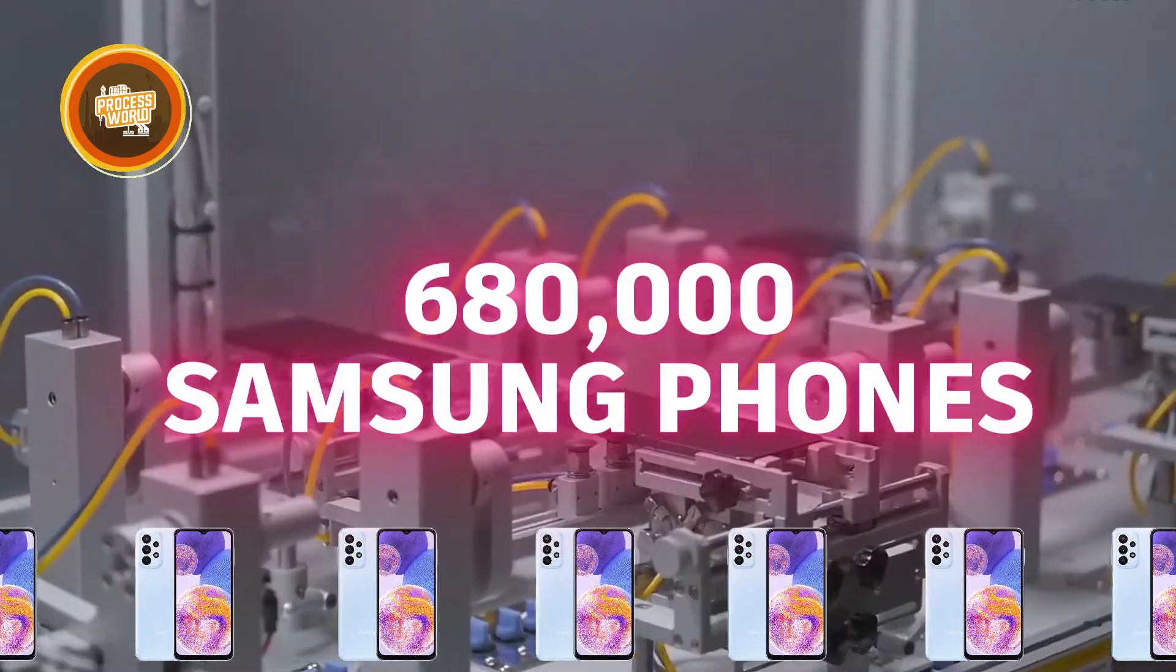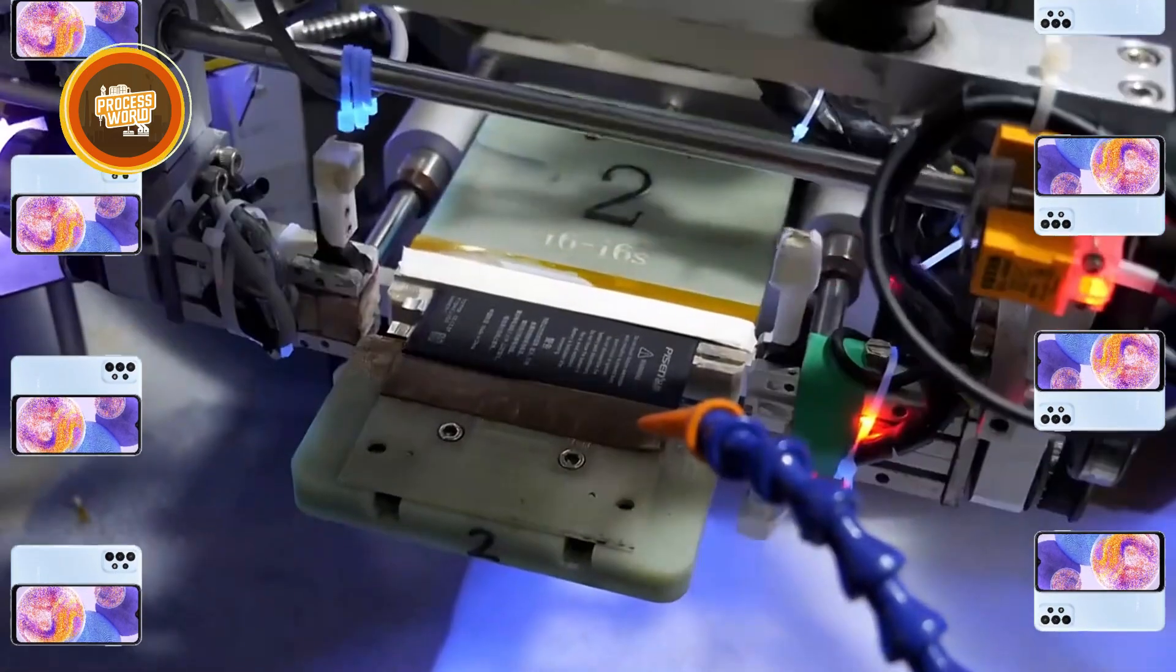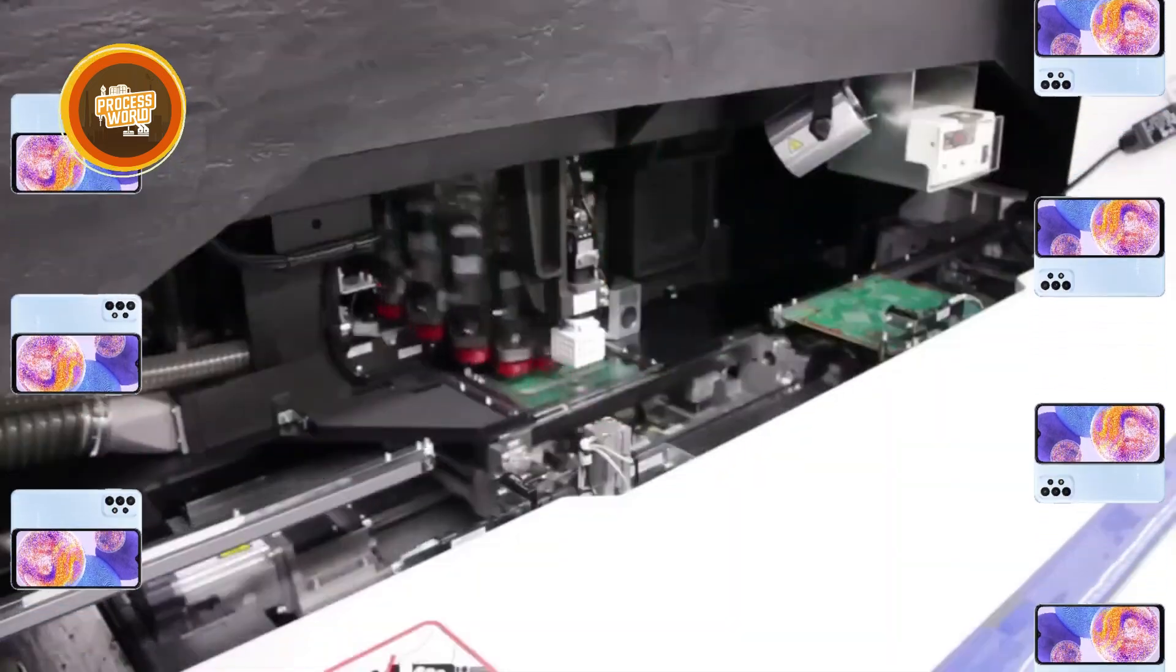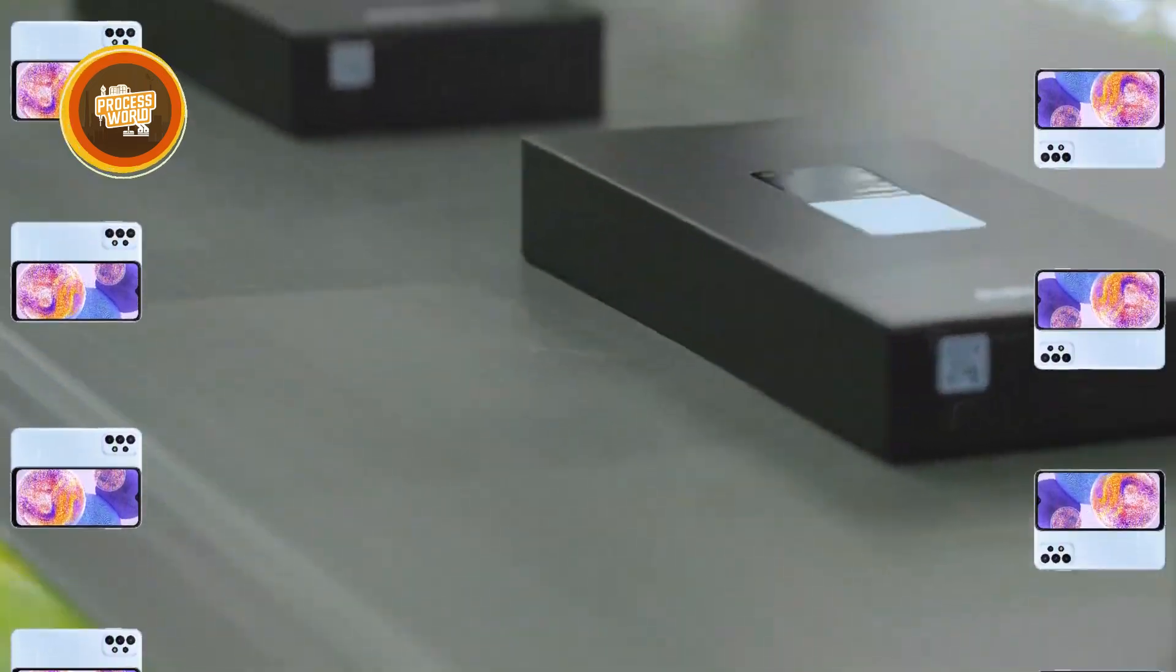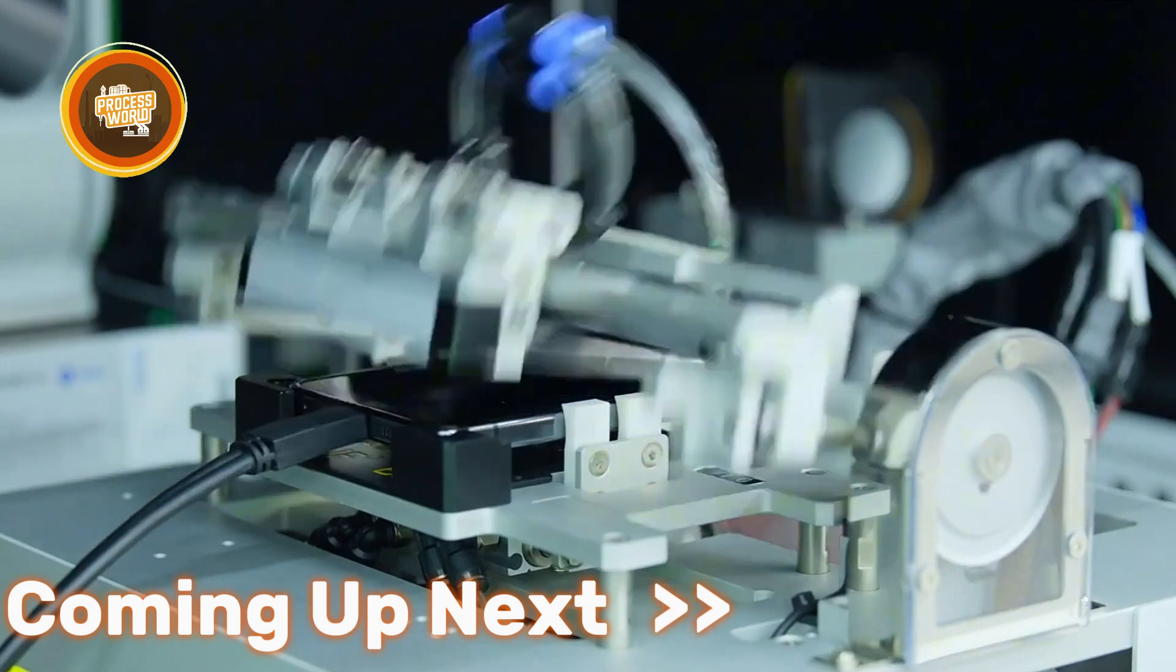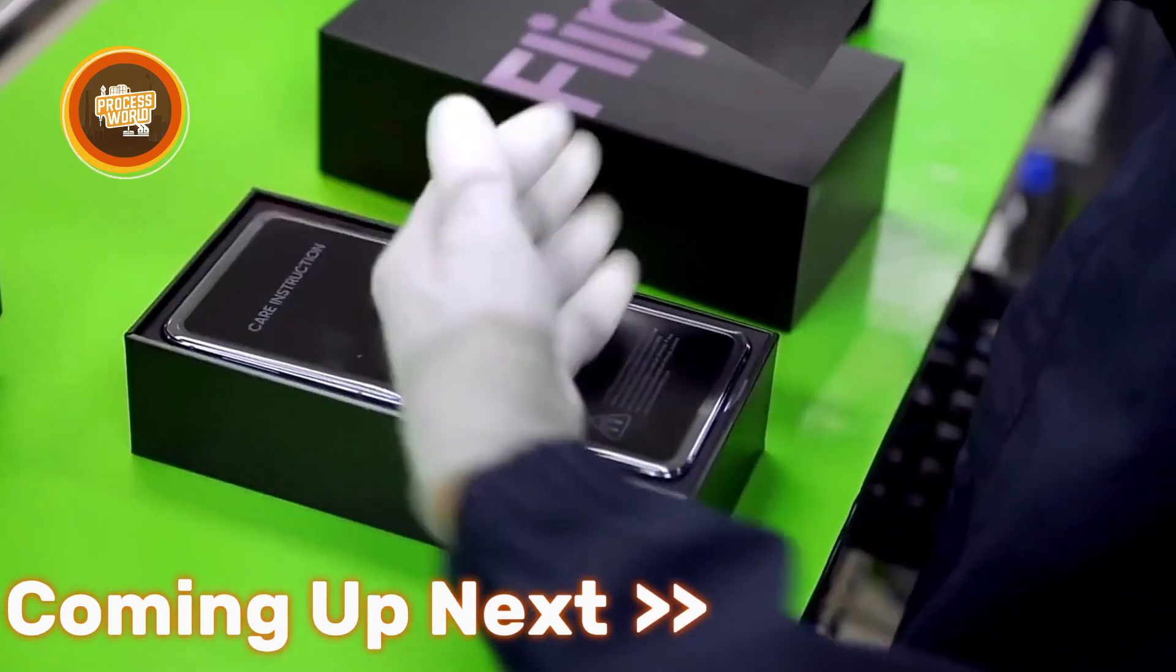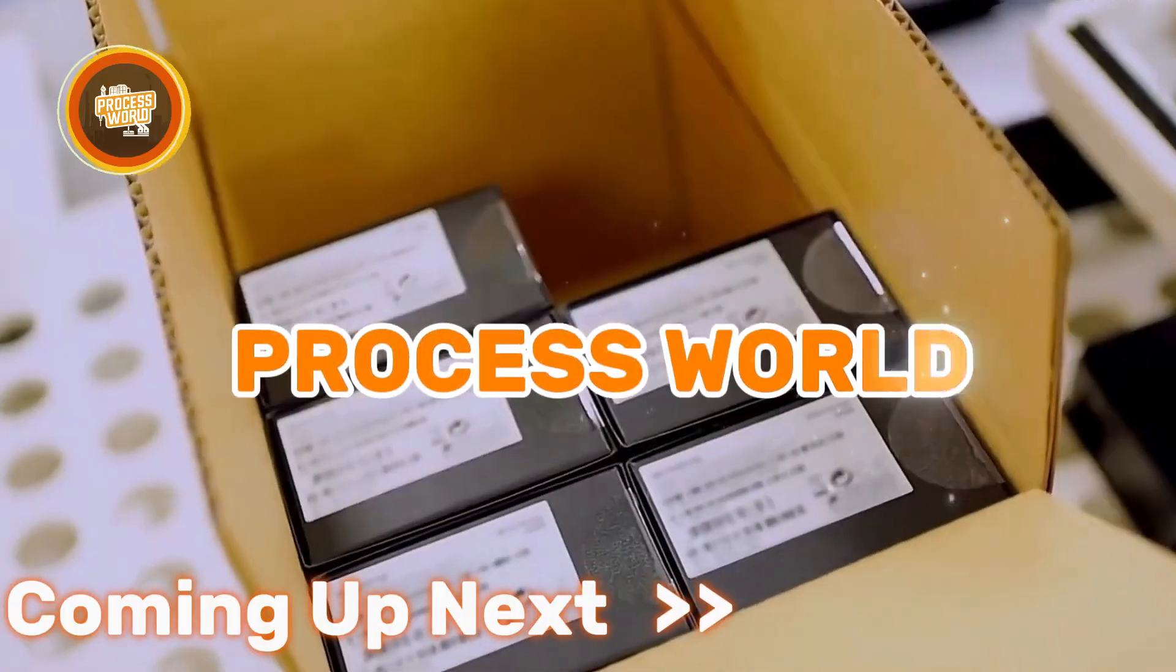Over 680,000 Samsung phones are sold every single day. From flashy foldables to budget-friendly Galaxy A models, Samsung is everywhere. And behind all those phones is a factory system so advanced it runs like a machine building machines. And we will cover all that here at The Process World.